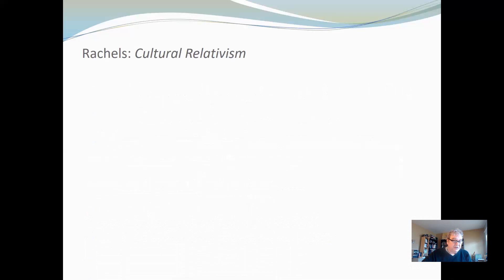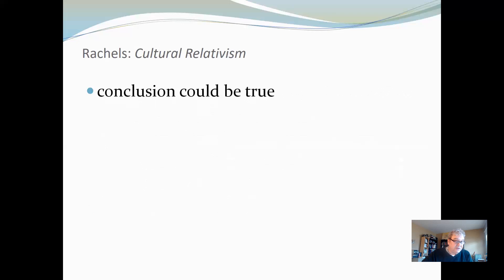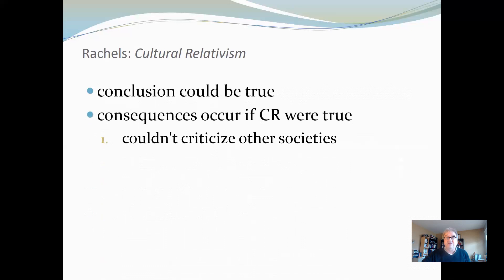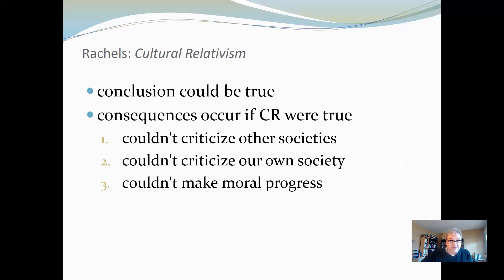To be fair, just because the argument is invalid doesn't mean the conclusion is not true — the conclusion could be true even though the argument doesn't give a good reason to think so. Rachels next gives some reason to think the conclusion is not true by outlining consequences that would occur if cultural relativism were true. This is a reductio ad absurdum argument: the truth of the conclusion would lead to absurd consequences. For instance, if cultural relativism were true, it would follow that we could not criticize other societies, we couldn't criticize our own society, and we couldn't make moral progress. Because our doing these things seems rational and right, cultural relativism must be false, according to Rachels.